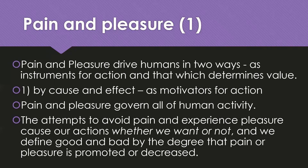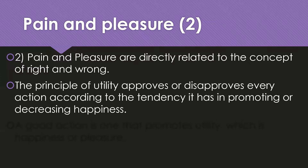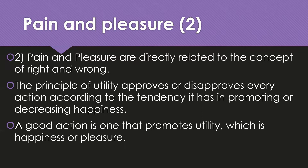There's a lot of merit to this idea. When we transfer it and talk about right or wrong, Bentham says that pain and pleasure are directly related to the concepts of right and wrong. The principle of utility — thus the name utilitarianism — approves or disapproves every action according to the tendency it has, or at least appears to have, in promoting or decreasing our happiness. Happiness is pleasure and a lack of pain. A good action is one that promotes utility, and utility is happiness or pleasure.